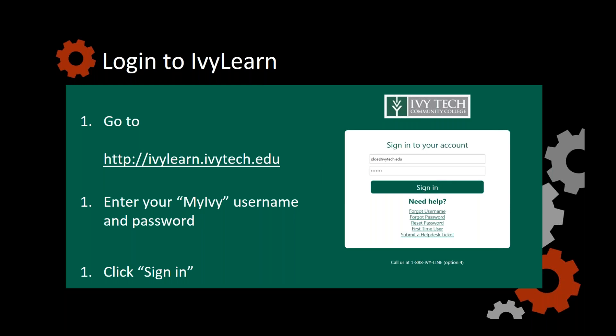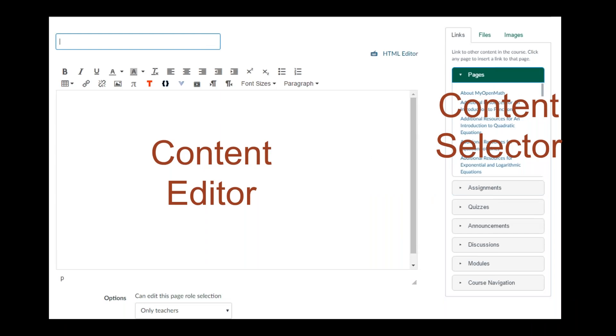We are going to start, just as we always do, by going to ivylearn.ivytech.edu and logging in with your username and password. Before I do that, I want to give you a quick overview of the Content Editor. The Content Editor, as you see it in IvyLearn, is divided into two parts: the Content Editor on the left-hand side of the screen and the Content Selector on the right-hand side.